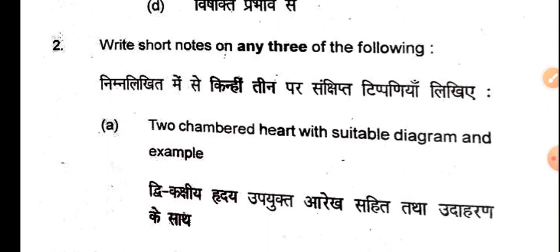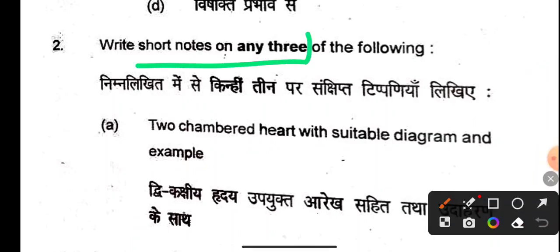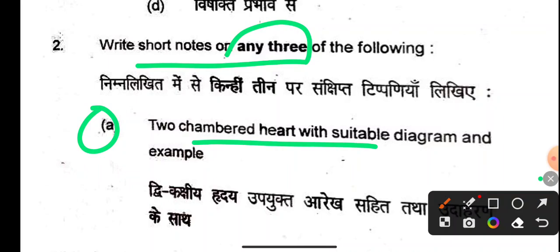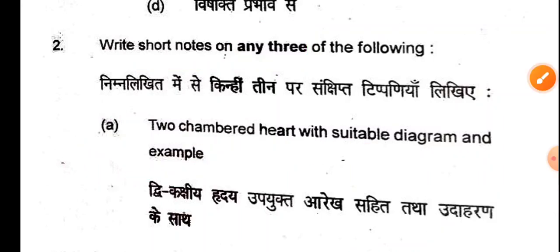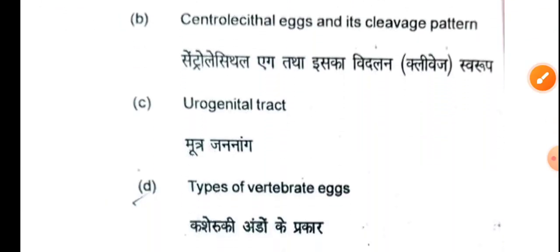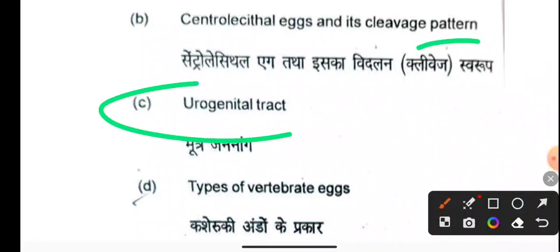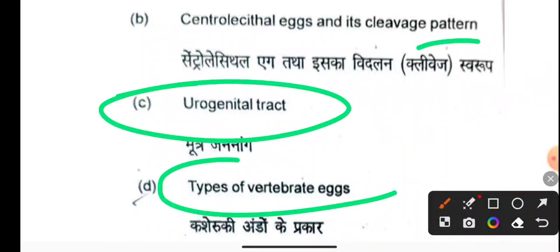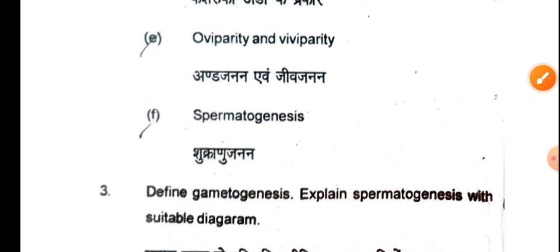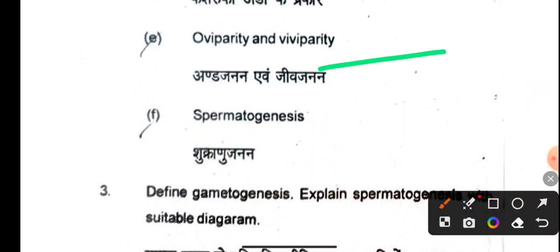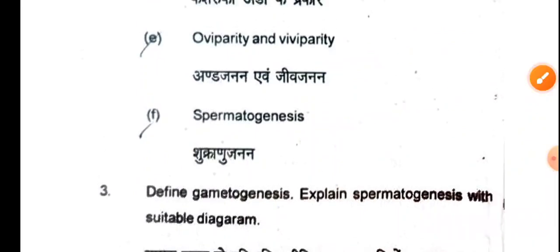Question number 2 requires us to write any 3 out of the given topics: the 2-chambered heart with suitable diagram and examples, telolecithal eggs and their cleavage pattern, the urogenital tract and types of vertebrate eggs, and oviparity and viviparity and spermatogenesis. These were the short notes questions.